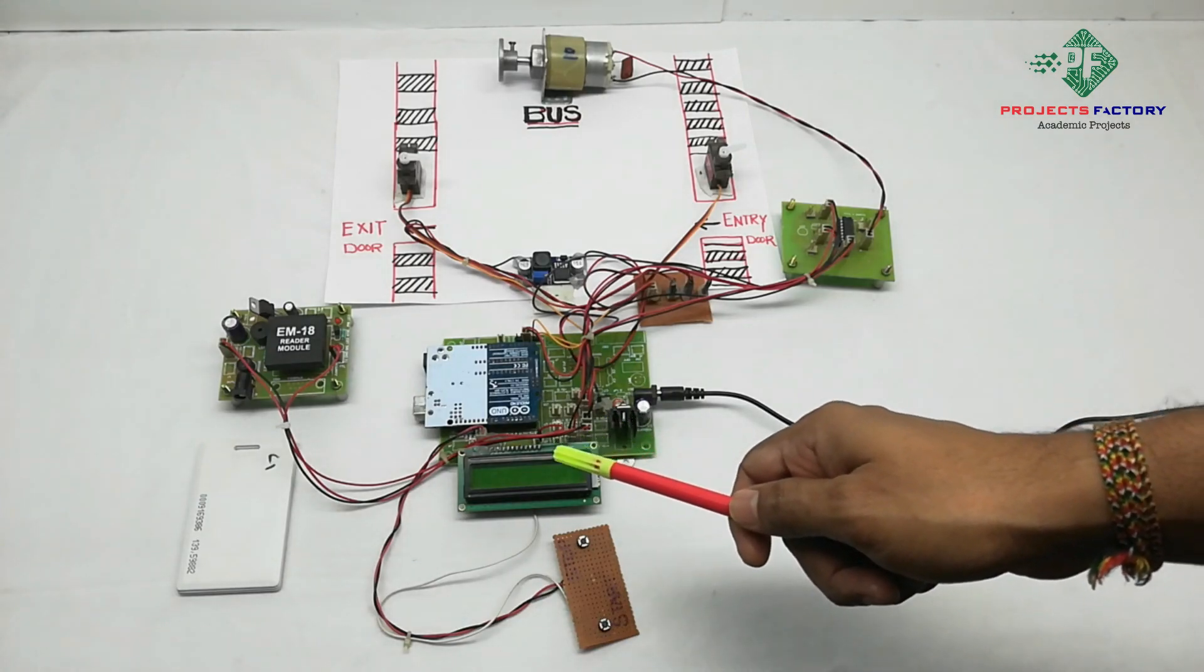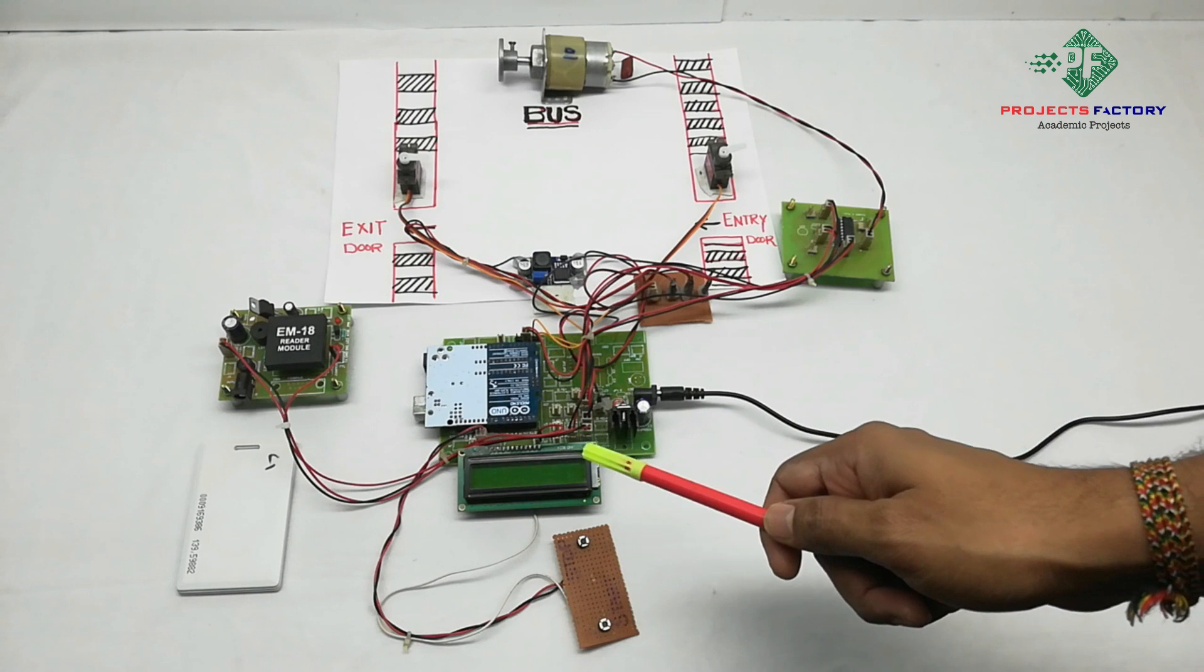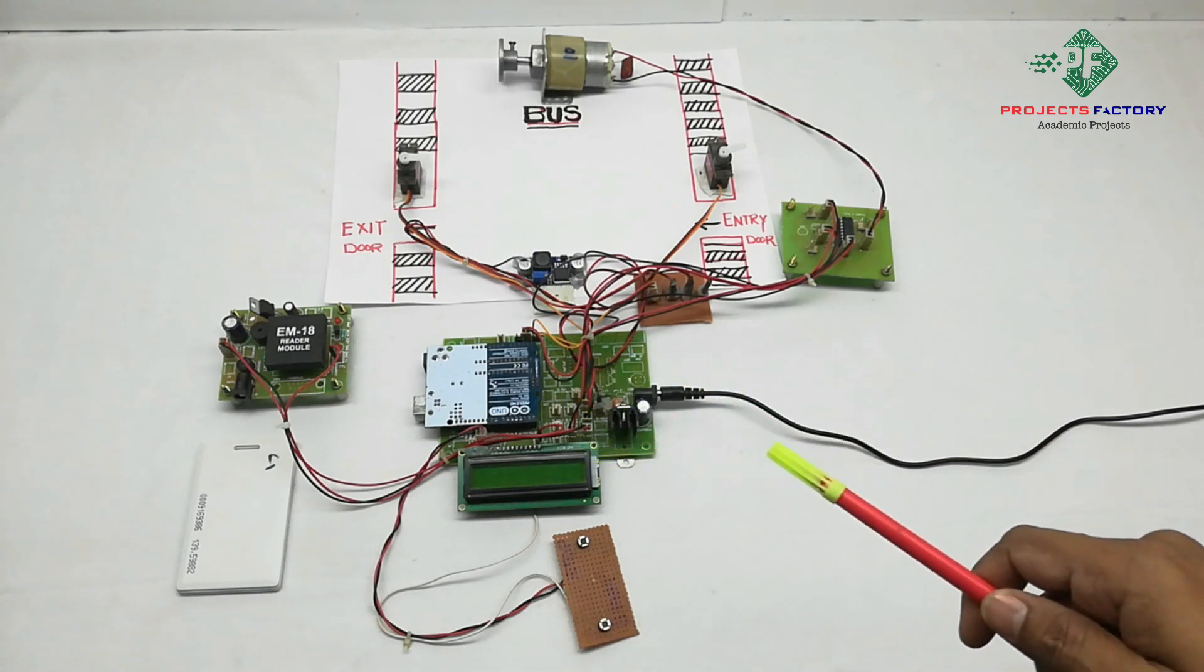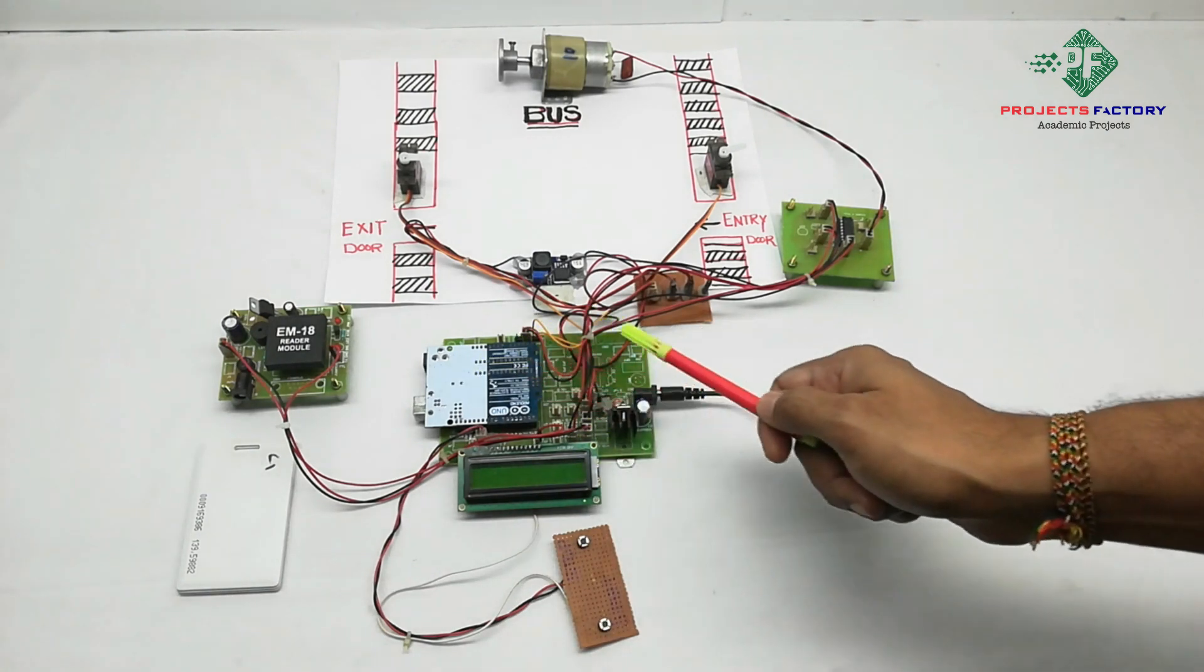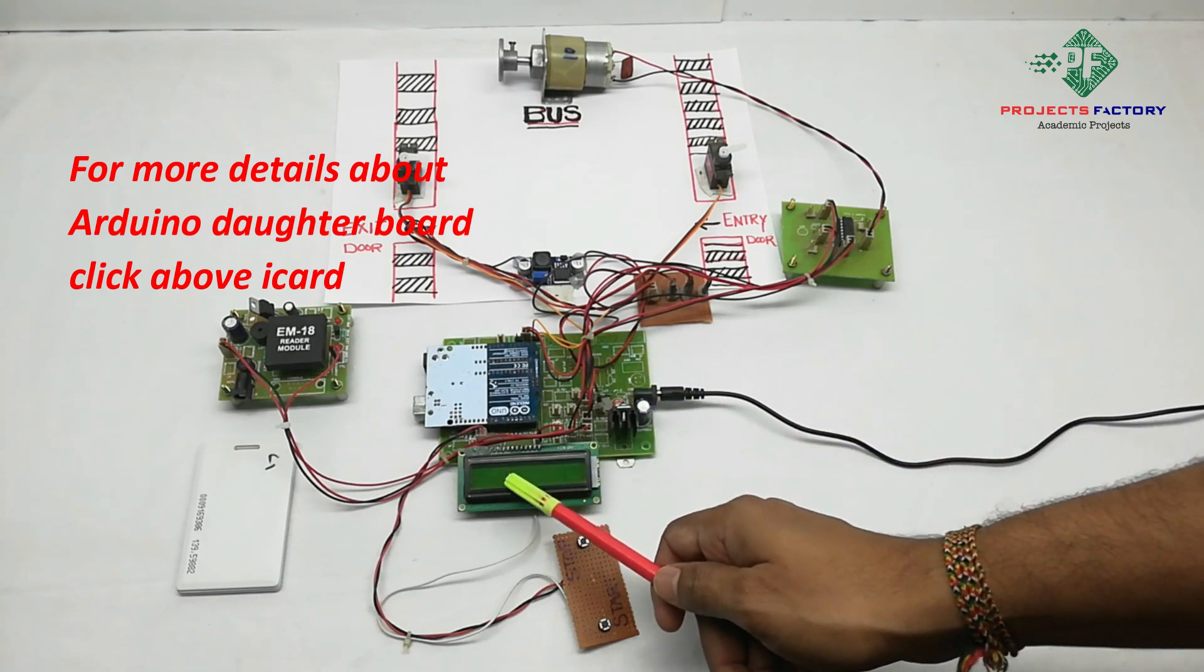This project is a smart card-based automatic bus ticketing system for travel distance. The hardware transmission is an Arduino with its daughterboard, aligned with power supply and 16x2 LCD display.